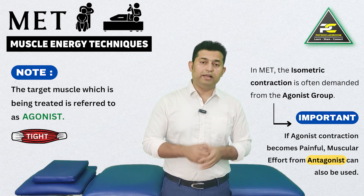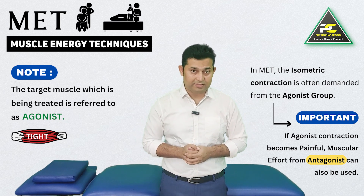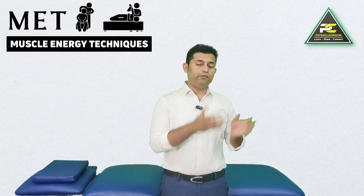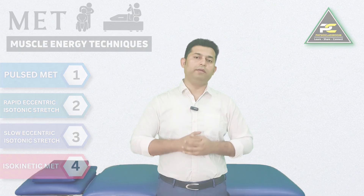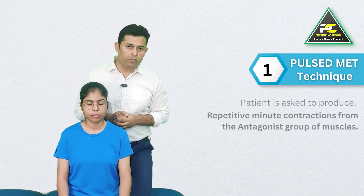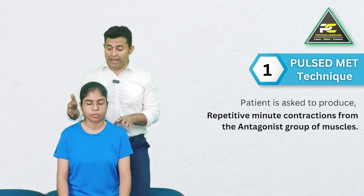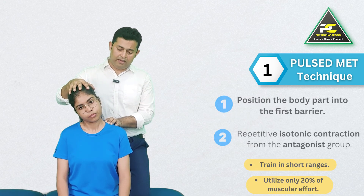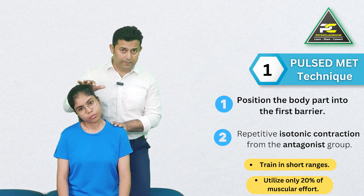Apart from the basic MET protocol utilizing isometric contractions, there are four additional MET variations. The first is known as pulsed MET. In pulsed MET, the patient is asked to produce repetitive minute contractions from the antagonist group of muscles. After positioning the head and neck into the first perceived barrier, instead of an isometric contraction from the left upper trapezius, we ask for repetitive isotonic contractions in short ranges from the right trapezius.